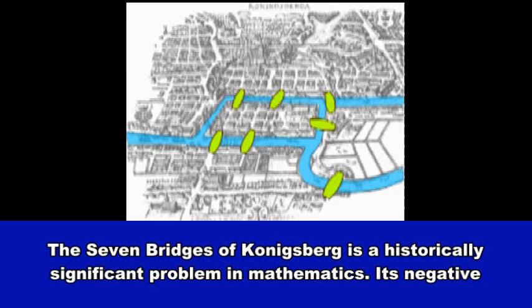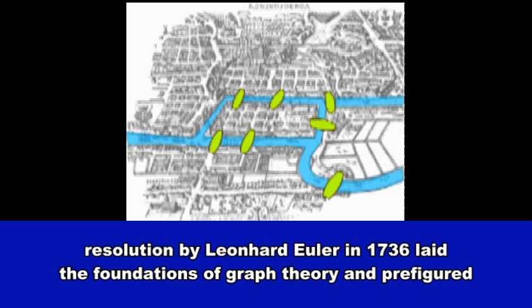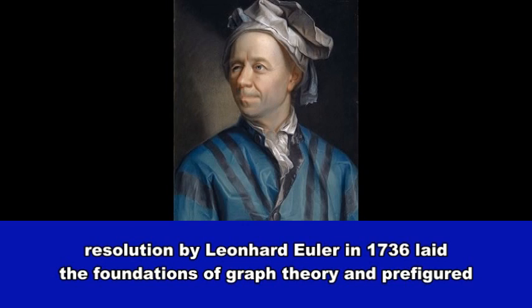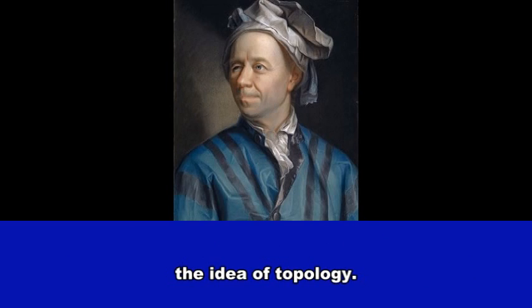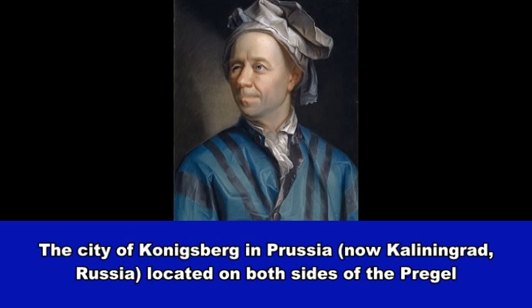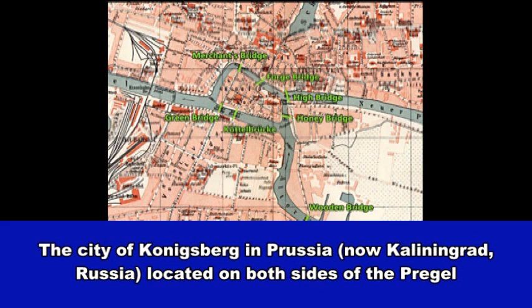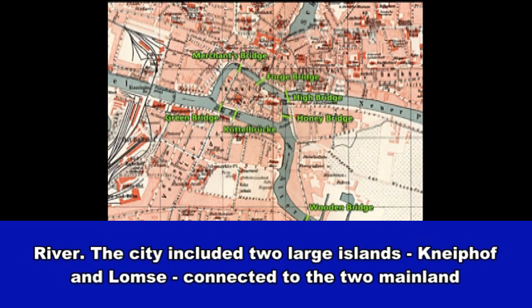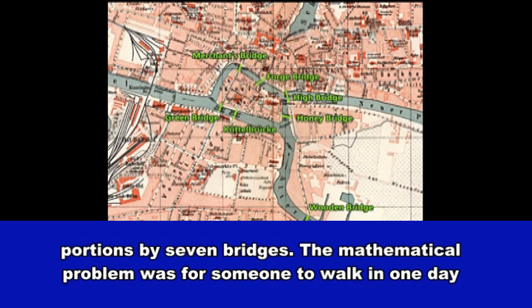The seven bridges of Koenigsberg is a historically significant problem in mathematics. Its negative resolution by Leonhard Euler in 1736 laid the foundations of graph theory and prefigured the idea of topology. The city of Koenigsberg in Prussia, now Kaliningrad, Russia, was located on both sides of the Pregel River. The city included two large islands connected to the two mainland portions by seven bridges.